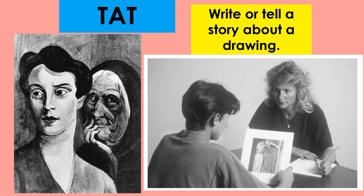Another commonly used projective test is called the TAT — the thematic apperception test. In this test, people look at a drawing that's somewhat unclear but always has people in it. They are asked to write or tell a story about the drawing. We think the story they tell will reveal their motivations, their emotions, the way they think about the world and about their relationships. The drawings are made very ambiguous — for example, it's unclear whether the person in the front is a man or a woman.